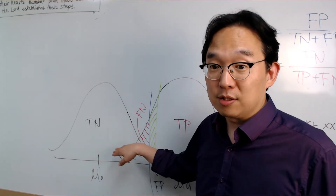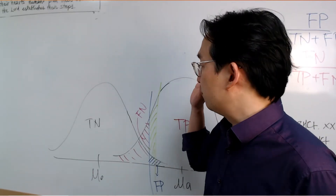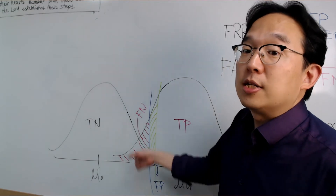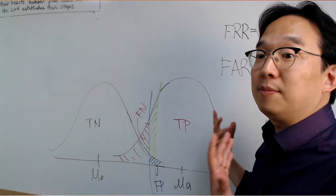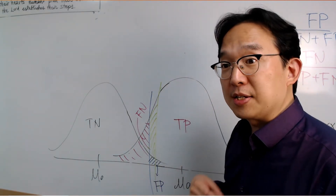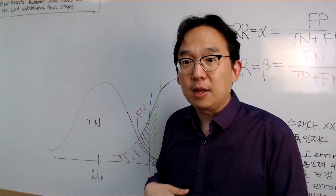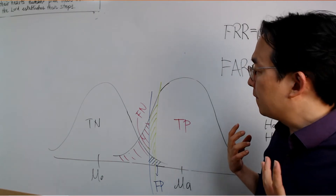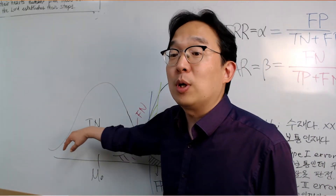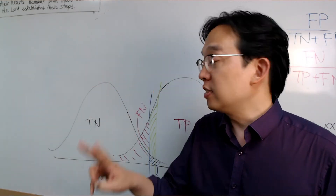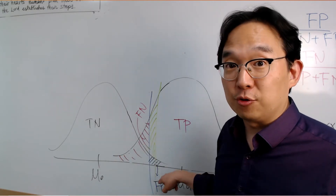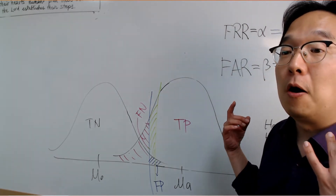To determine whether a person is really infected with COVID-19 or not, you set up a threshold based on the distributions. Beyond that threshold, you claim the test result is positive; below it, the result is negative. For healthy individuals — who should truly be negative — there are two possible outcomes: true negative and false positive.